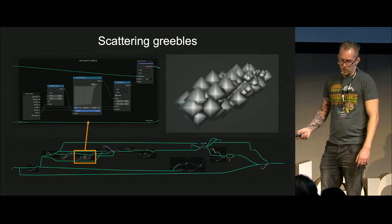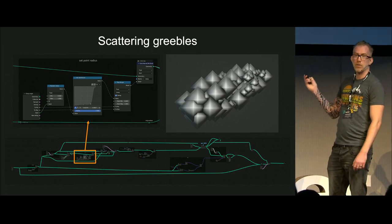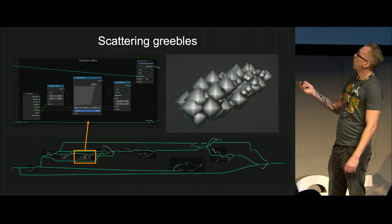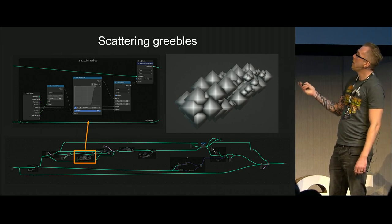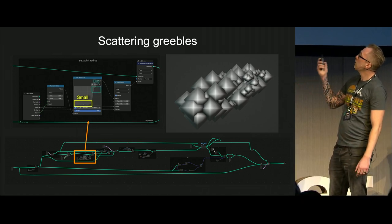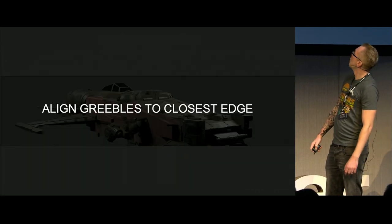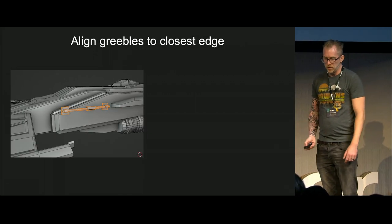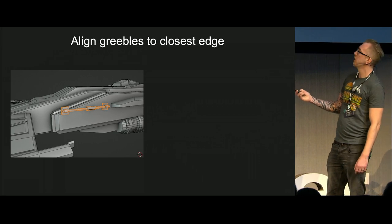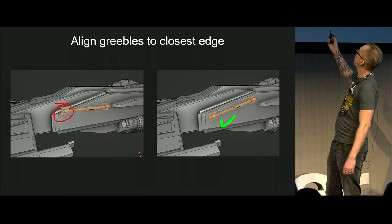Now we want to snap it back to the surface of the original object using the geometry proximity node — take the position and set the position of these vertices. Now, finally, we can scatter the points which will become greebles. In this step, I want to set a scale to all of the points. I get a random value between 0 and 1 and remap that, so I get kind of 80% small greebles and 20% big — it's a magic number. This is kind of awkward where it floats in mid-air; we want it aligned perfectly along the closest edge.